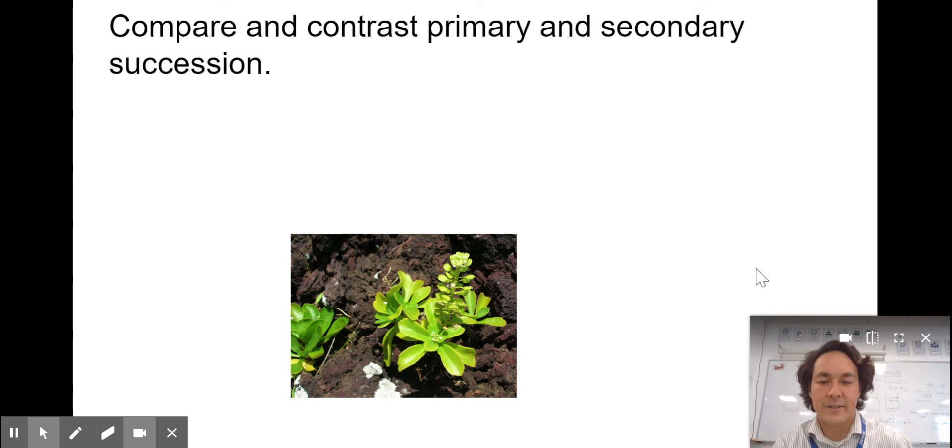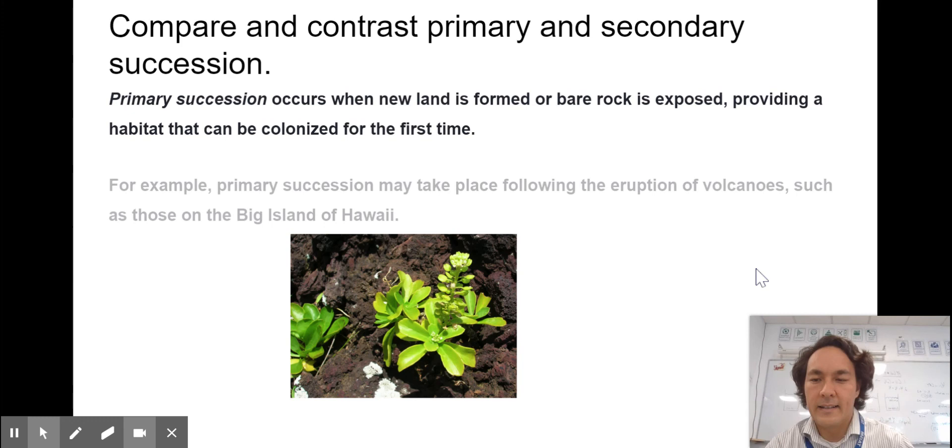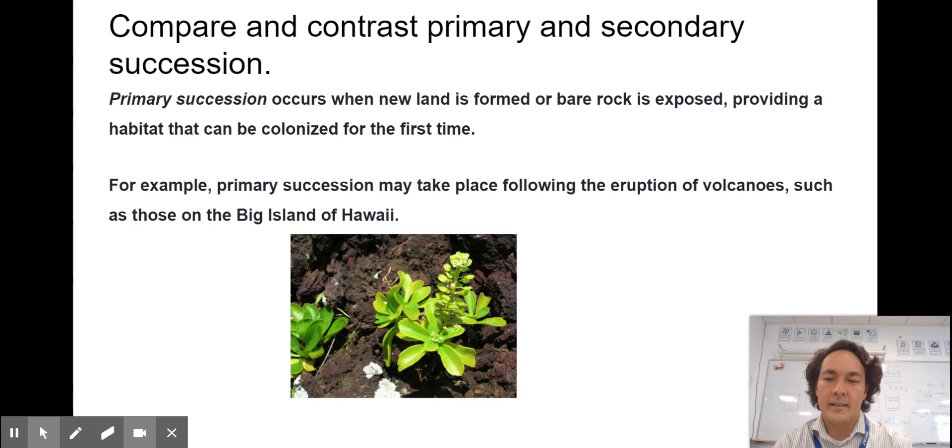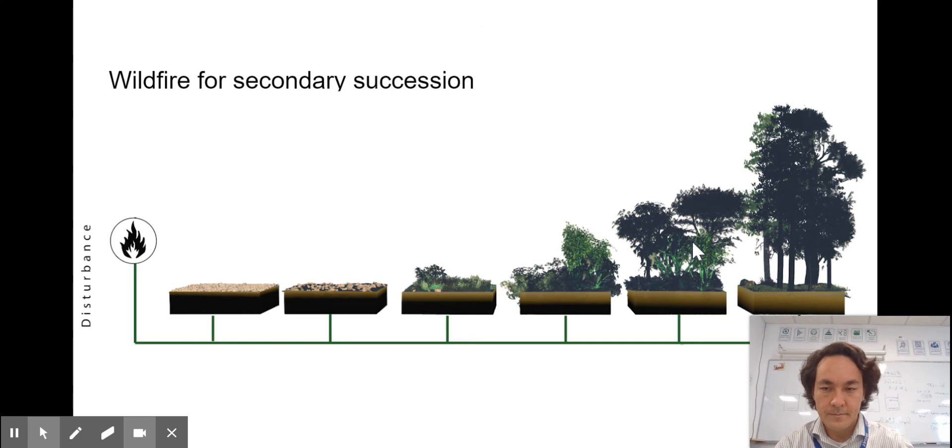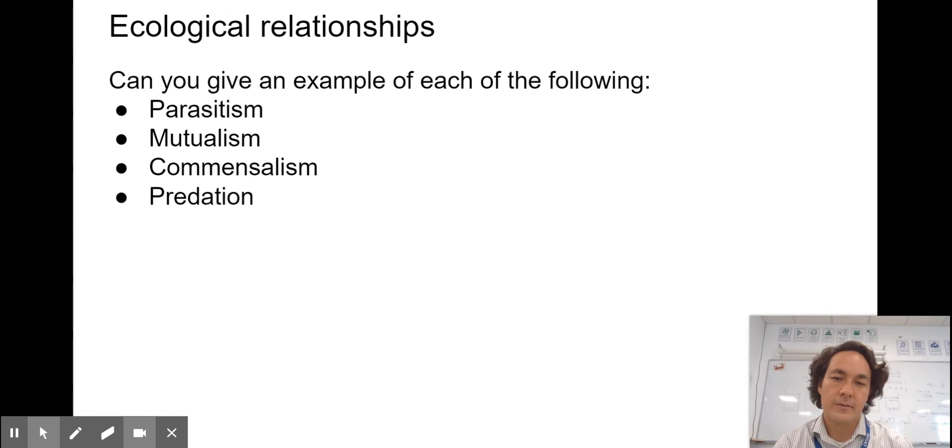Can you compare and contrast primary and secondary succession? You all had a lot of practice with this. Primary succession occurs when new land is formed or bare rock is exposed, and secondary succession follows the eruption of volcanoes or natural disasters. We looked at how those purple plants were coming back afterwards. Here would be an example of wildfire secondary succession, which we're seeing happen right now in the western U.S.